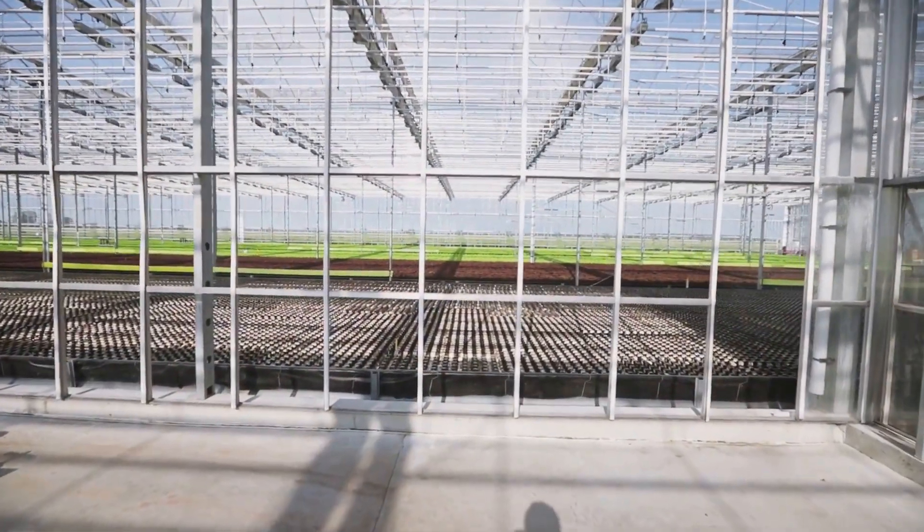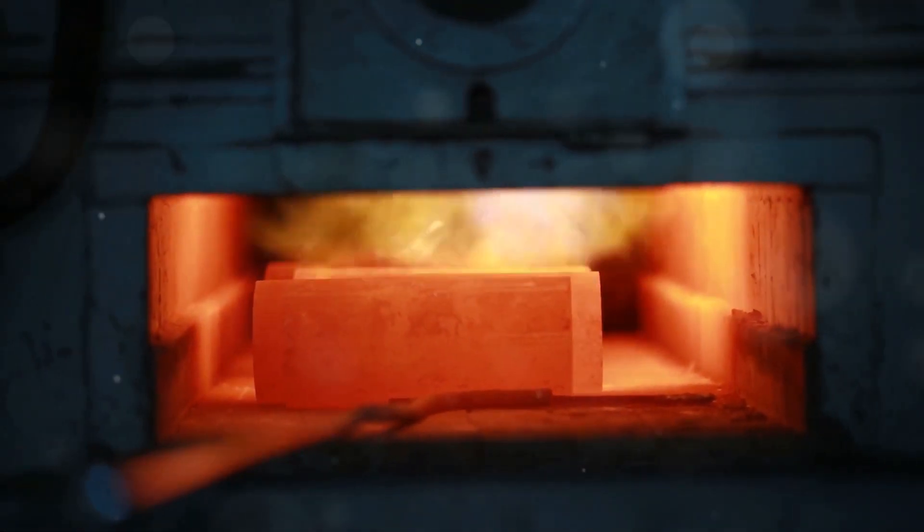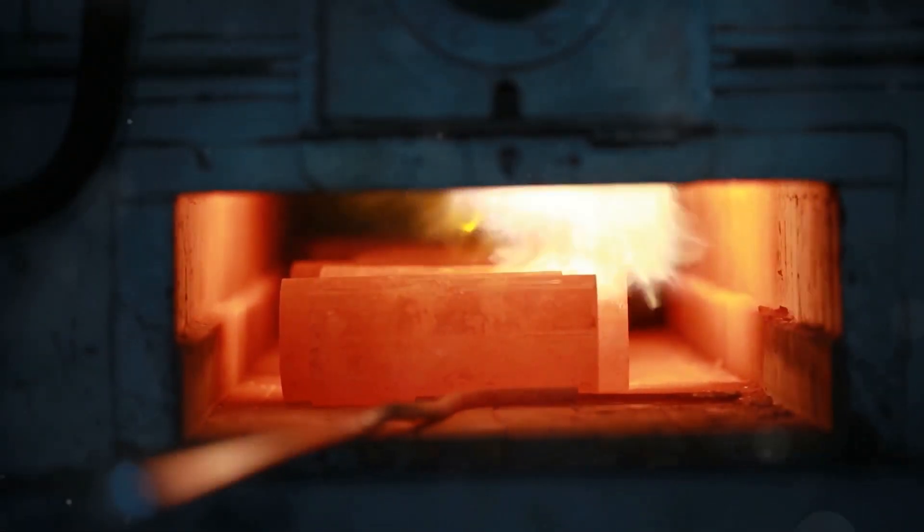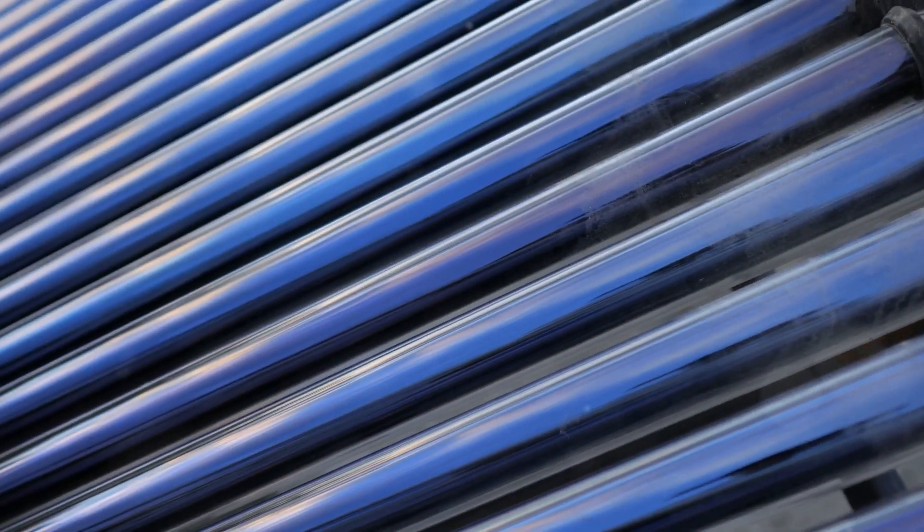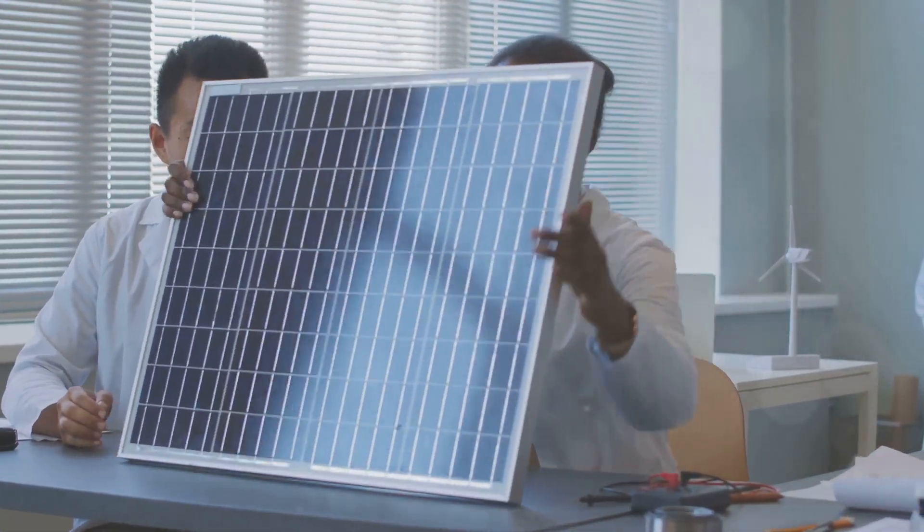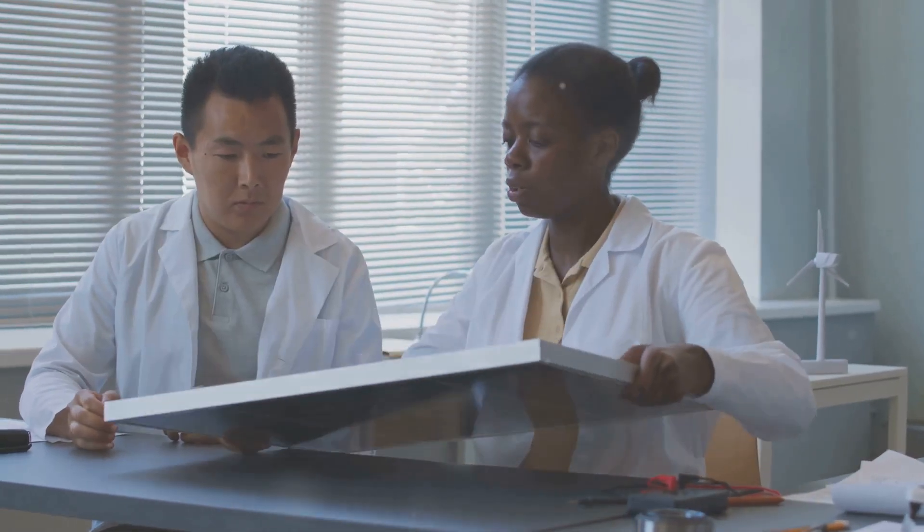This radiation can travel through transparent materials like air or glass. Think of a greenhouse, where sunlight enters and warms the interior. The color and surface properties of an object influence its radiation characteristics. Darker colors absorb more radiation, while lighter colors reflect it. Understanding radiation is crucial when designing systems exposed to sunlight or high temperatures, such as spacecraft or solar panels.